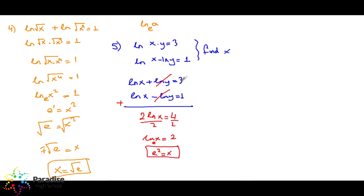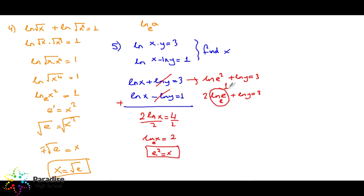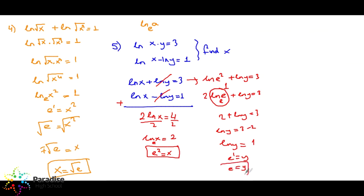Substituting x equals e squared into the first equation: ln(e squared) plus ln y equals three. The power comes to the front: 2 ln e plus ln y equals three. Since the base and the number are both e, ln e equals one. So 2 times 1 equals 2: 2 plus ln y equals three, giving ln y equals one. Converting to index form: y equals e to the power of one, so y equals e.